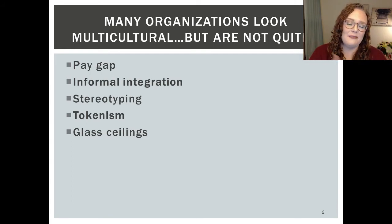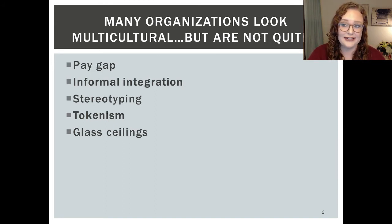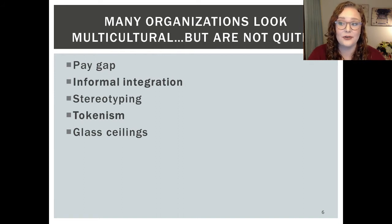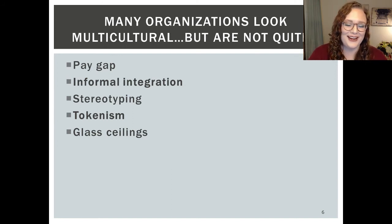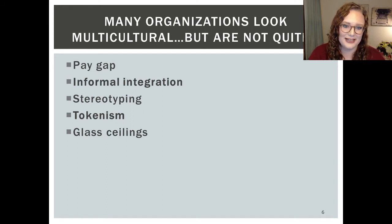Here are some behaviors and actions that might indicate an organization is not as diverse or multicultural as they might claim to be. An organization probably is adhering to anti-discrimination laws, but that doesn't mean that there isn't unintentional discrimination going on. First, there's the pay gap — women of color make significantly less than their white counterparts as well as their male counterparts. The two things I want to focus on that you really need to understand are informal integration and tokenism.